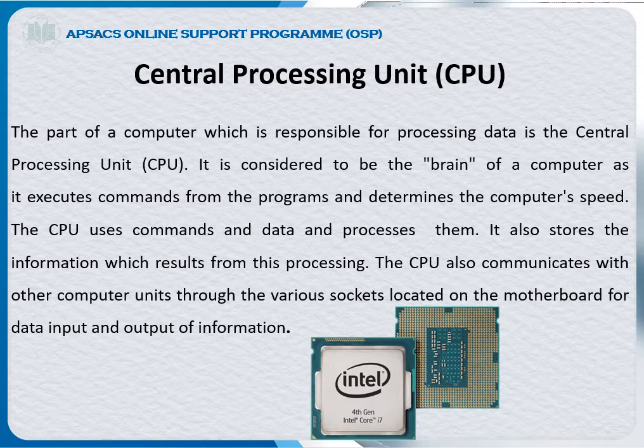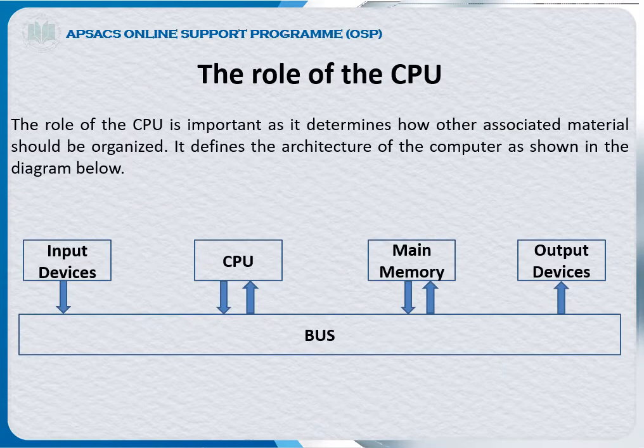The role of the CPU is important as it determines how other associated components should be organized. It defines the architecture of the computer as shown in the diagram: input devices, CPU, main memory, and output devices. These components connect with the bus. The bus consists of interconnected wires that connect to your motherboard.